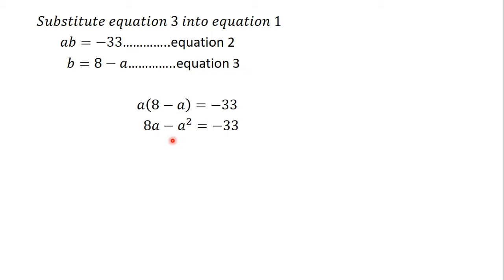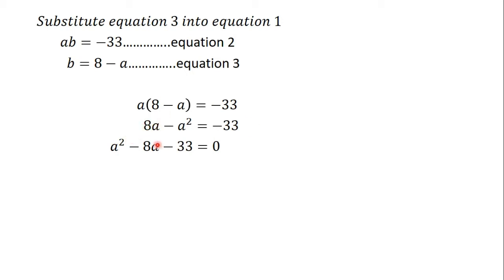You can see this is looking like a quadratic equation, so we rearrange it to solve. I send minus a squared to the other side — it becomes positive — and I send 8a over as well — it becomes negative. So we get a squared minus 8a minus 33 equals zero.